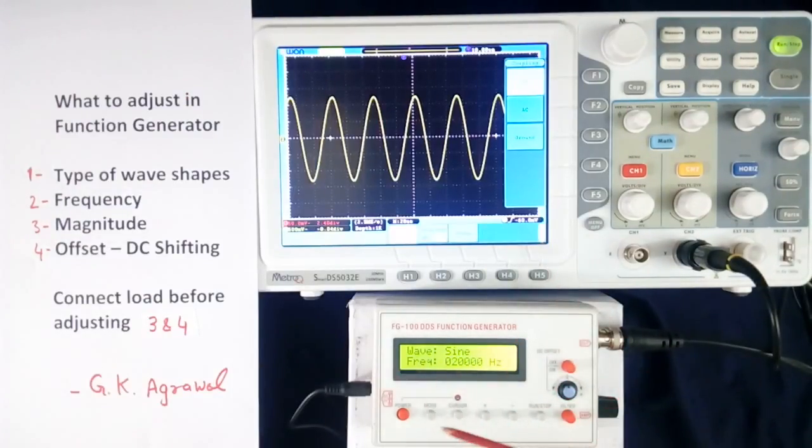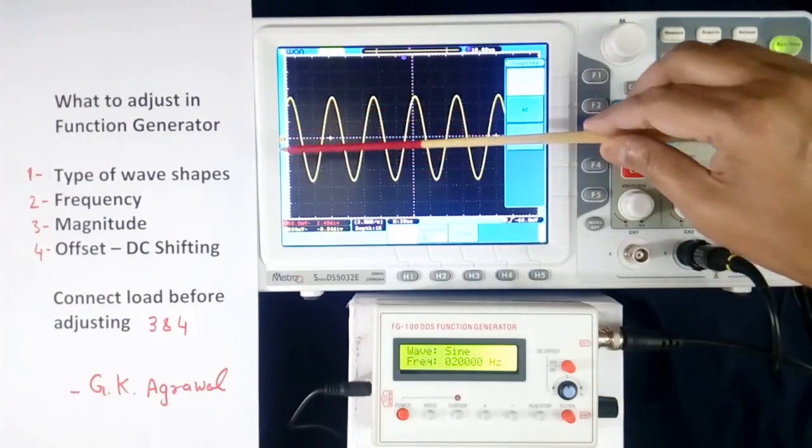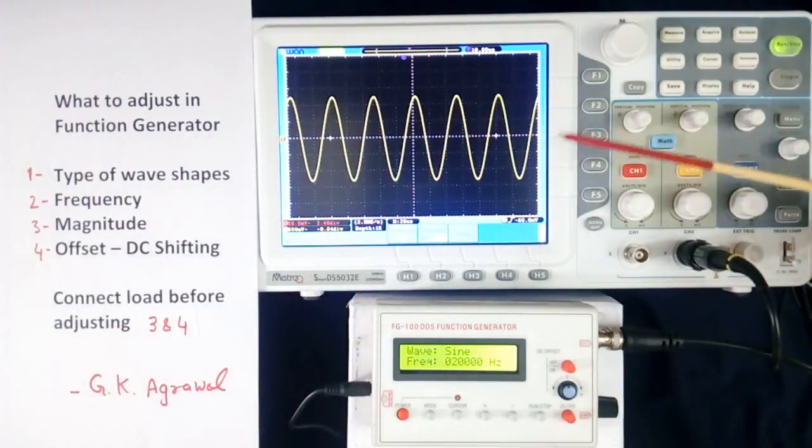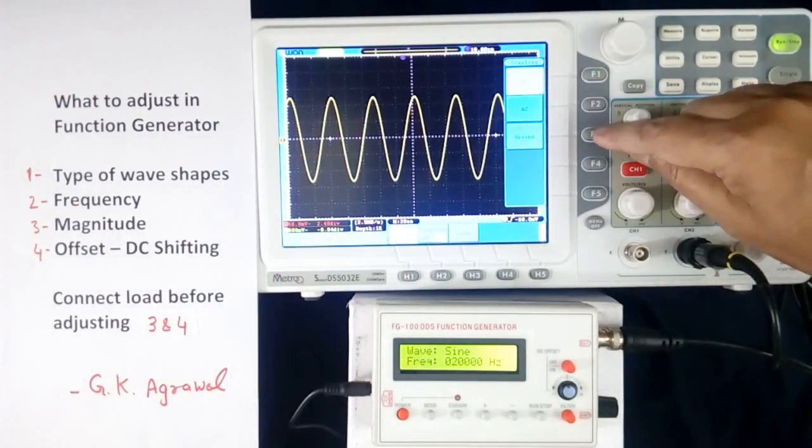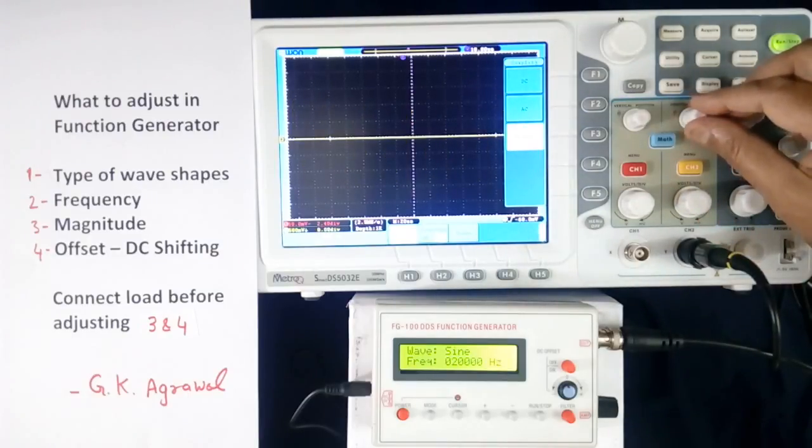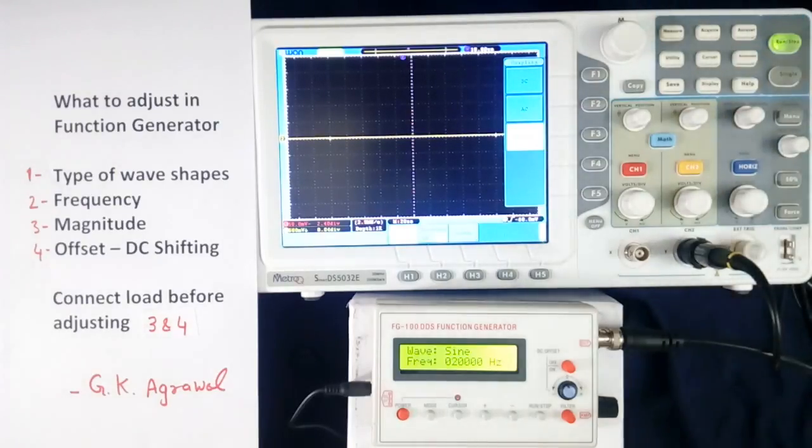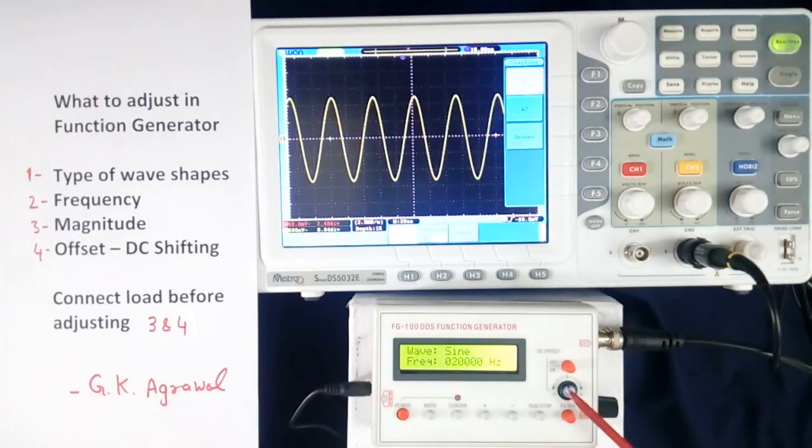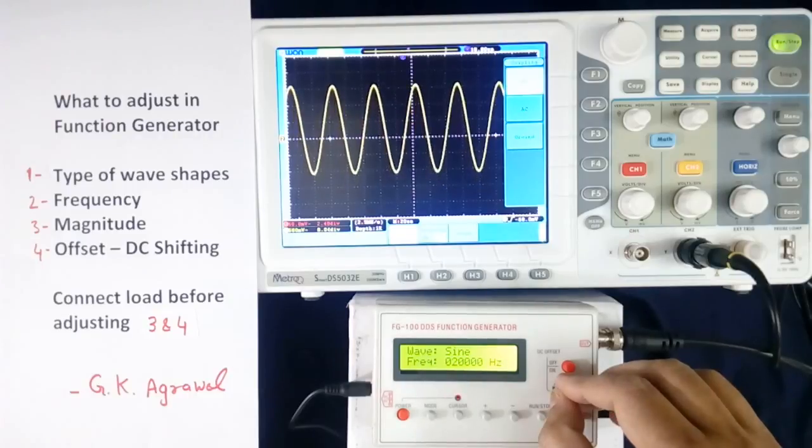Now to adjust offset, first we should know where is the zero line. So first I will adjust zero line here in the middle. That is done by coupling. There are 3: ground, AC and DC. I will make ground coupling. Now I will adjust like this and bring the zero line in the middle. Now again we will make DC coupling. Now using this part here in my function generator, other it may be different way, I can adjust.